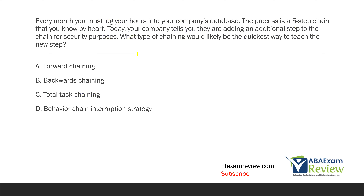Every month you must log your hours into your company's database. The process is a five-step chain that you know by heart. Today, your company tells you they are adding an additional step to the chain for security purposes. What type of chaining would likely be the quickest way to teach the new step? We have a chaining question — task analyses create task chains, and then we can teach task chains in a variety of ways. We want to find the quickest way to teach the new step.